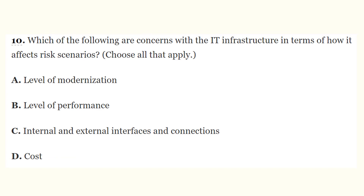Question 10: Which of the following are concerns with the IT infrastructure in terms of how it affects risk scenarios — choose all that apply? The correct answers are level of modernization, level of performance, and internal and external interfaces and connections. All of these are concerns with how the IT infrastructure would influence risk scenarios except for cost. Cost would be a concern about how the IT infrastructure is used to respond to risk, but not necessarily its influence over the likelihood or impact of a risk scenario.